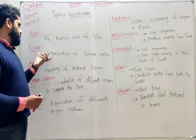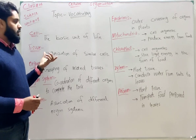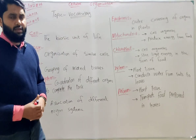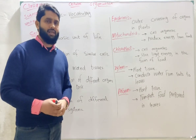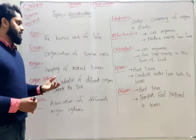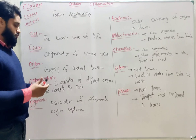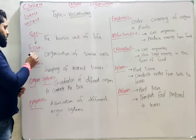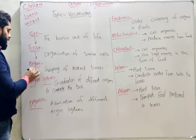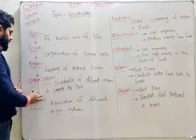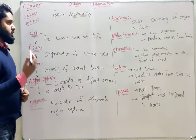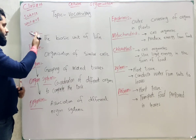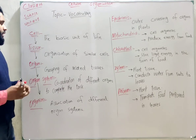Our next definition is tissue. What is tissue? The organization of similar cells — that is, the group of cells. A group of cells that are similar in function and in structure is called tissue. As we see, cells combine to form tissue, tissue combines to form organ, organ combines to form organ system, and organ system combines to form an organism — as discussed in the chapter name, Cellular Organization.